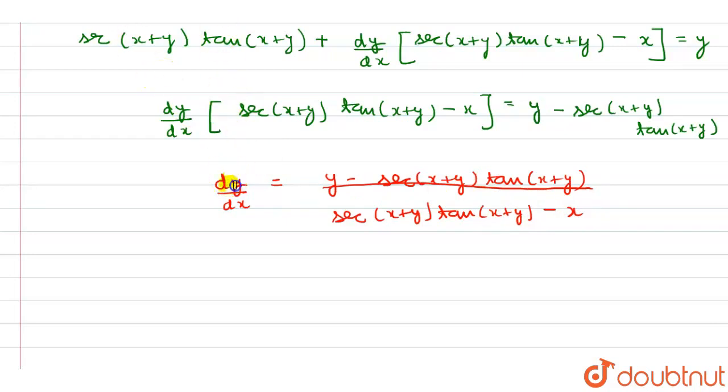So dy by dx equals y minus sec x plus y times tan x plus y over sec x plus y tan x plus y minus x. This is the final answer. Thank you.